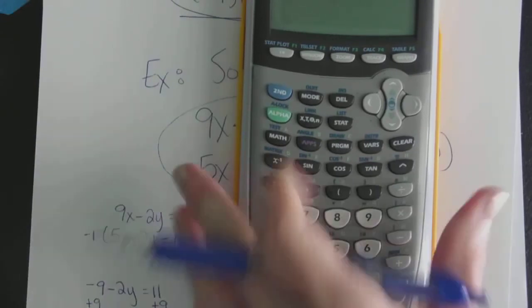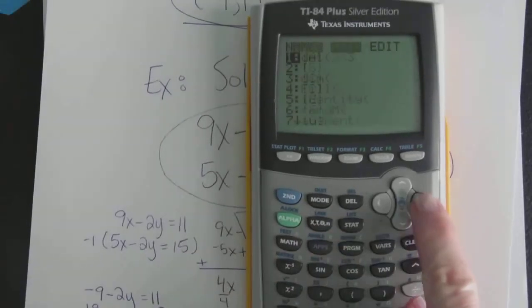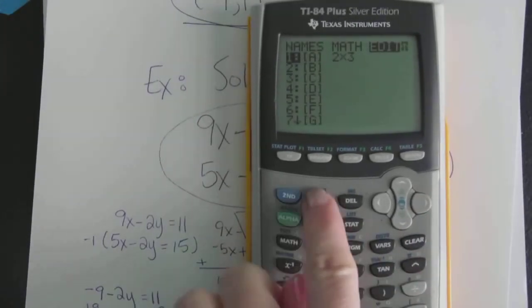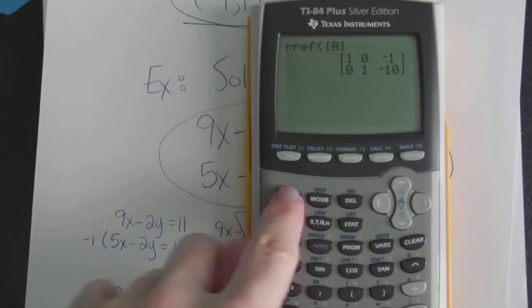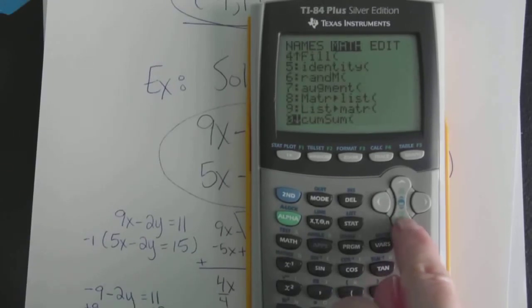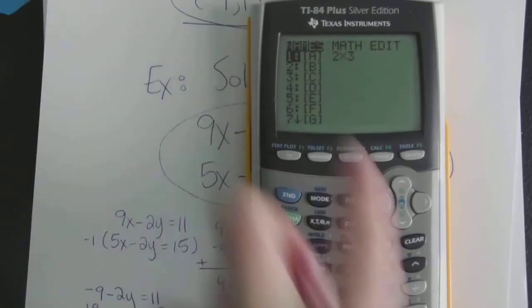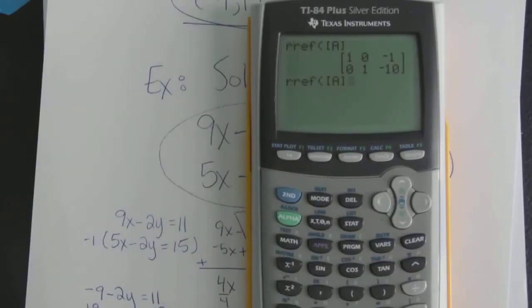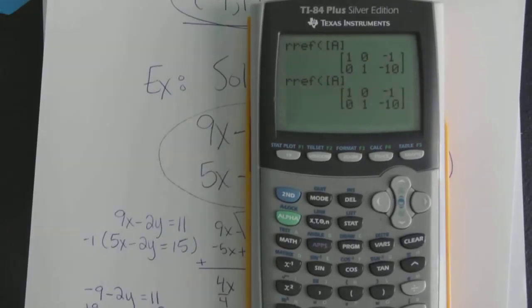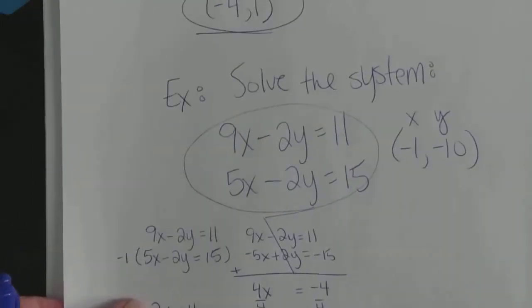So that's a little bit more complicated because there's a lot of keystrokes. You actually end up pressing second matrix three total times because first you have to press second matrix to get in and do the edit. Once you have the edit done, you quit. Then you got to press second matrix to do the math and choose the R-R-E-F. The third time you press the matrix is to name the matrix. So you actually end up pressing second matrix three different times to get this solution.